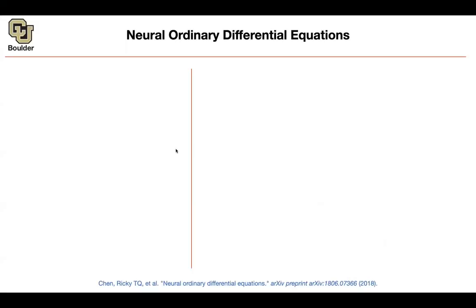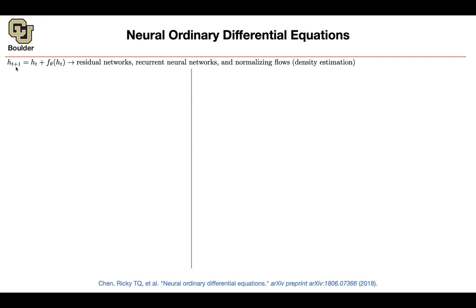Let's start with neural ordinary differential equations and take a look at a residual connection. The idea is: H of L plus F of H of L gives you H of L plus one. But if you change the index to T and interpret it as time — your layers as time — something interesting shows up. This framework also appears in recurrent neural networks and normalizing flows. If you look at it more closely, it looks like you are discretizing an ODE.